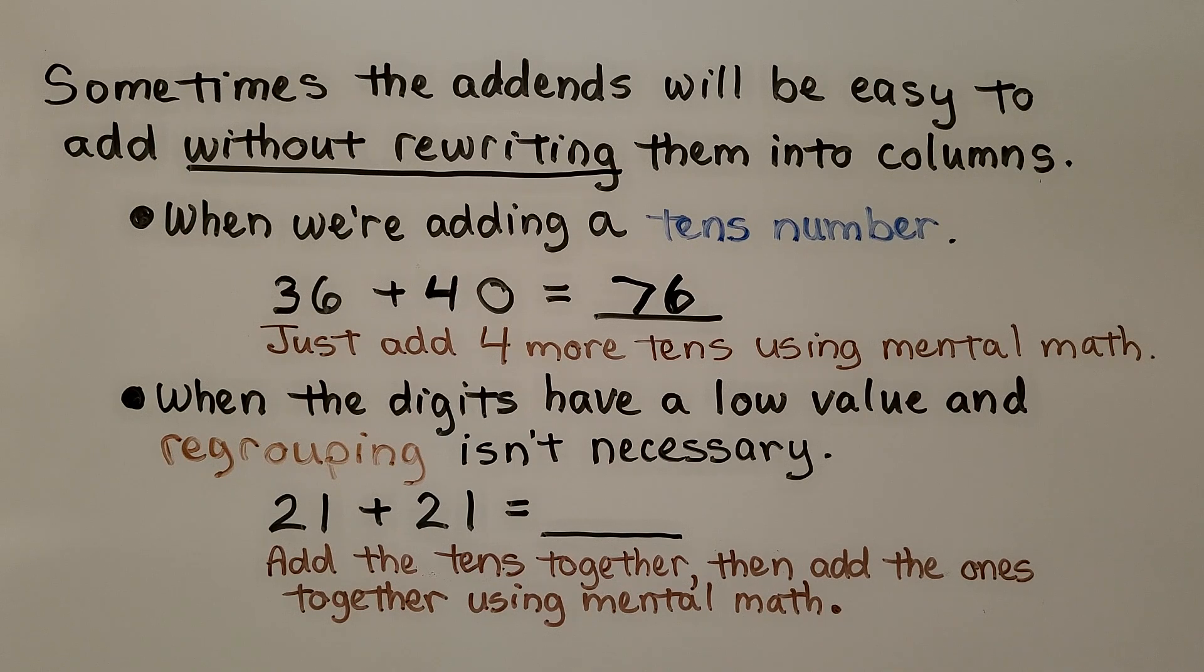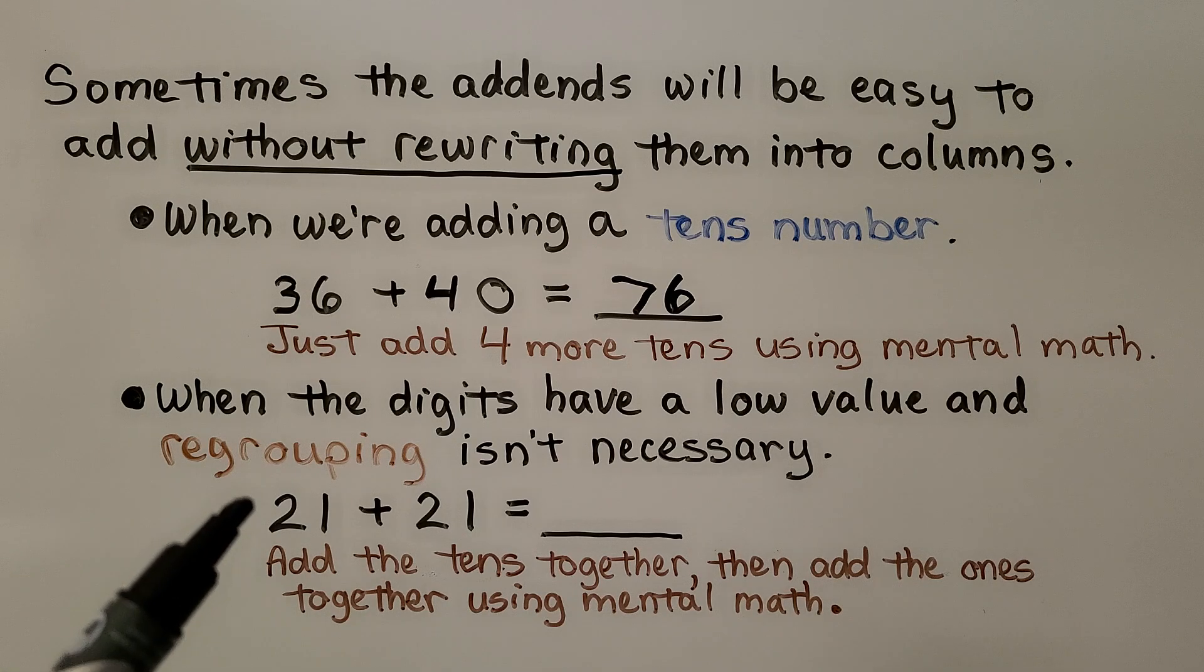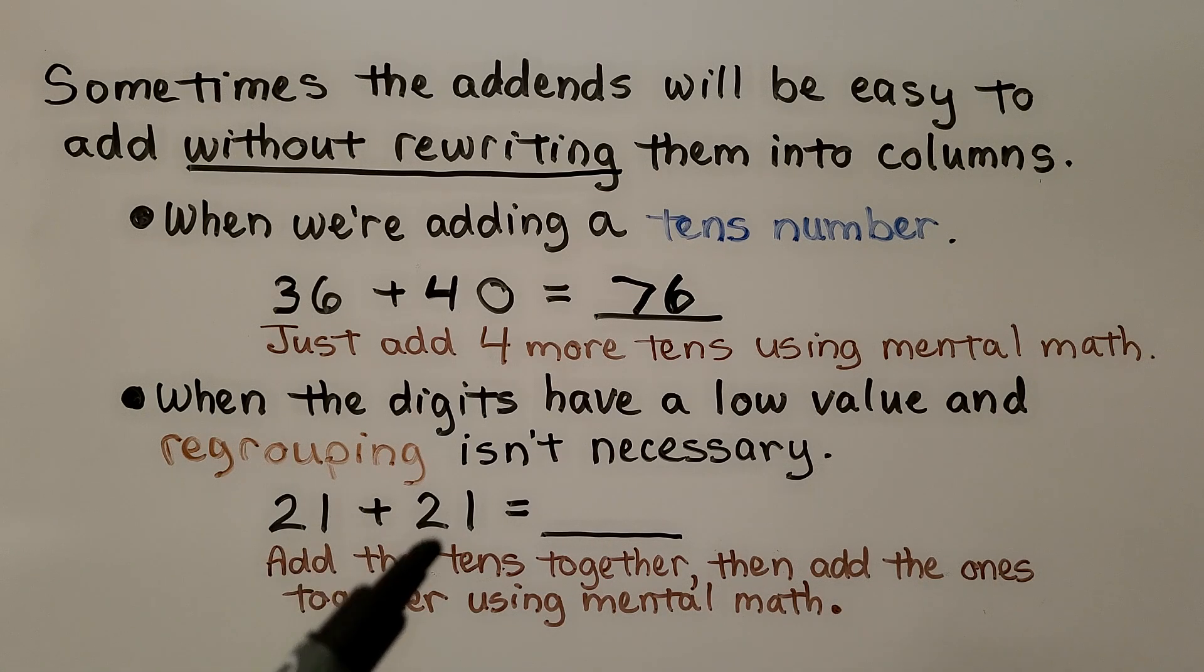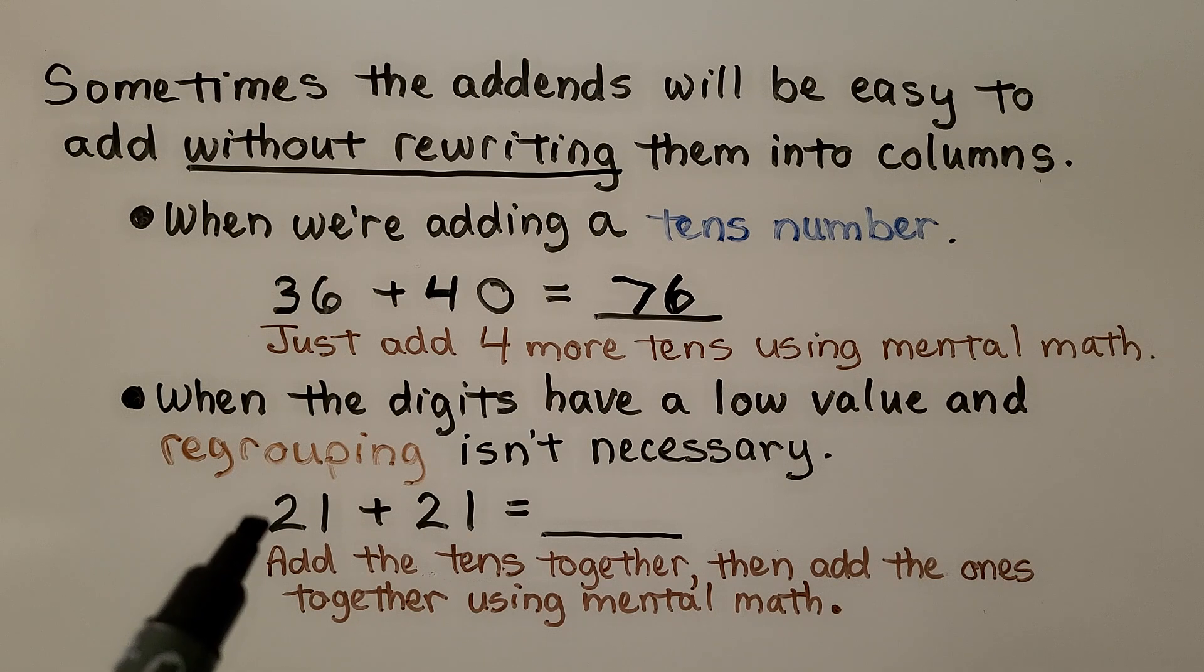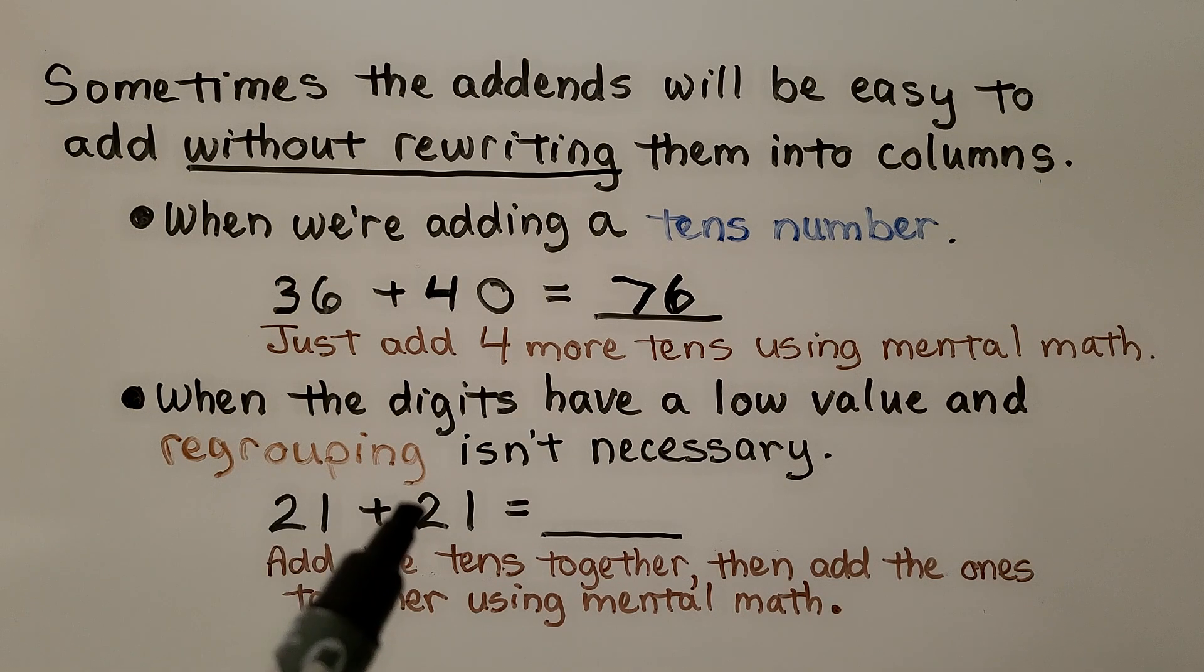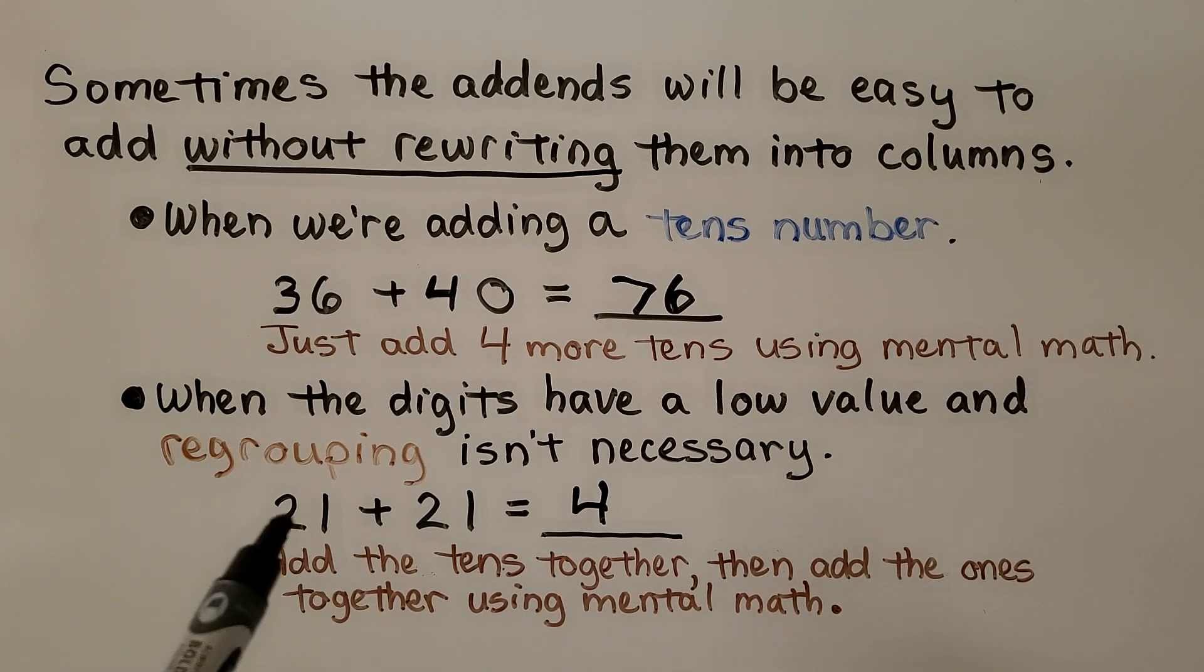It's also easy to add without rewriting them into columns when the digits have a low value and regrouping isn't necessary. If we're adding 21 plus 21, we can add the two tens together first. Two tens and two tens is 4 tens. And 1 plus 1 is equal to 2. 21 plus 21 is equal to 42.